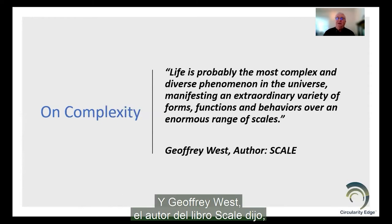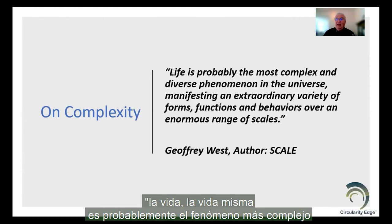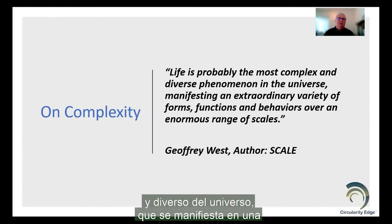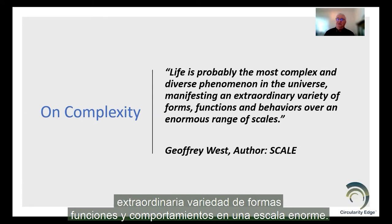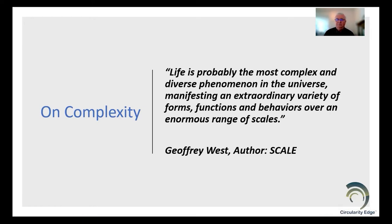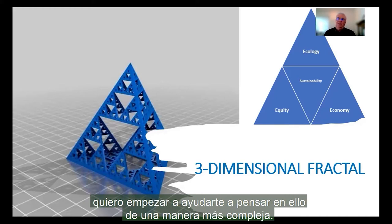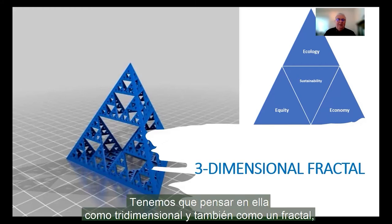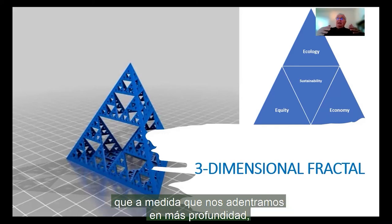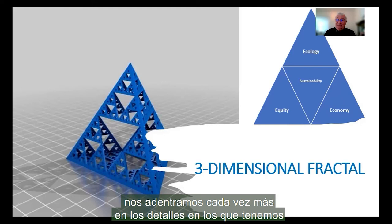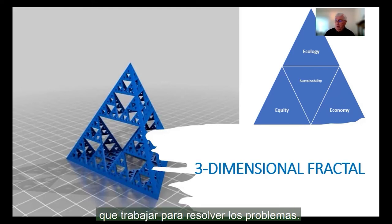Geoffrey West, the author of the book Scale, said life itself is probably the most complex and most diverse phenomenon in the universe, manifesting itself in an extraordinary variety of forms, functions, and behaviors over enormous scales. So when I look at this simple triangle of ecology, equity, and economy, I want to begin to help you think about it in a more complex way. We have to think of it as three-dimensional and also as a fractal, which as we go inside in more depth, we get more and more into the detail that we have to work on in order to solve the problems.